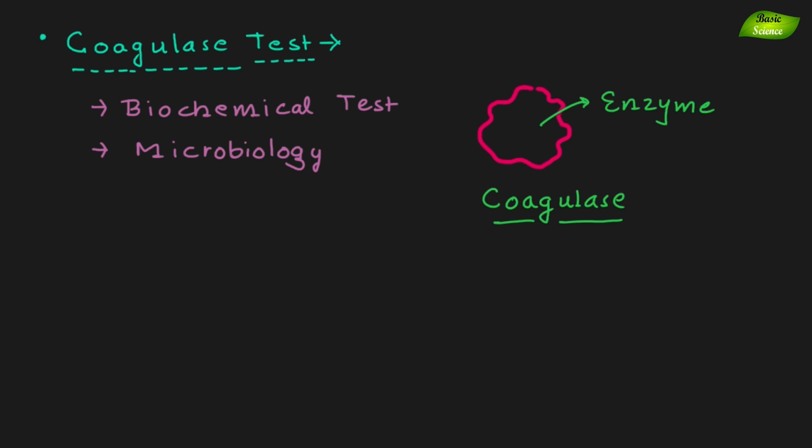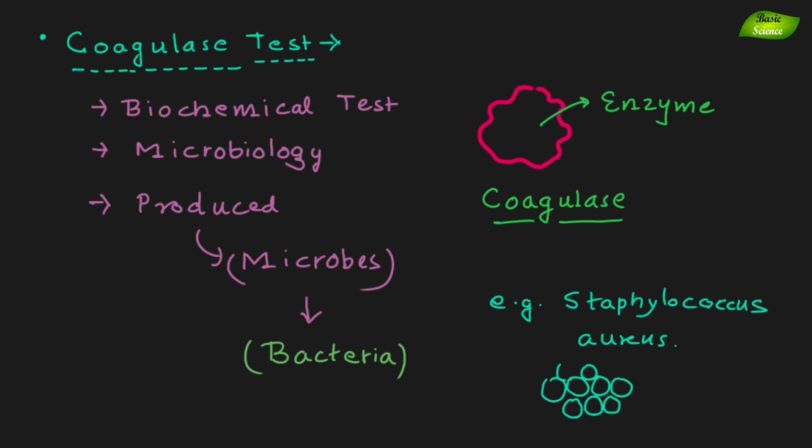And how is the enzyme being produced? When the bacteria is cultured in a media, the microbe will produce, especially the bacteria will produce coagulase enzyme and that enzyme is detected by this test. The organism that produces that enzyme is Staphylococcus aureus and it's gram-positive cocci which is present in clusters.